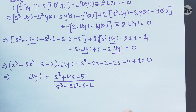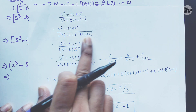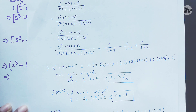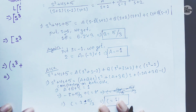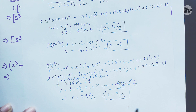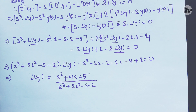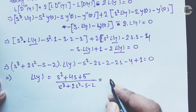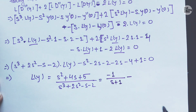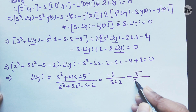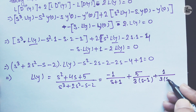Now we need to do the partial fraction of this expression. I have done the partial fraction on another page to keep the video shorter. If you watched my previous lecture on partial fractions, you can easily solve this. On solving, we get A = −1, B = 5/3, and C = 1/3. So: L{y} = −1/(s+1) + (5/3)·1/(s−1) + (1/3)·1/(s+2).